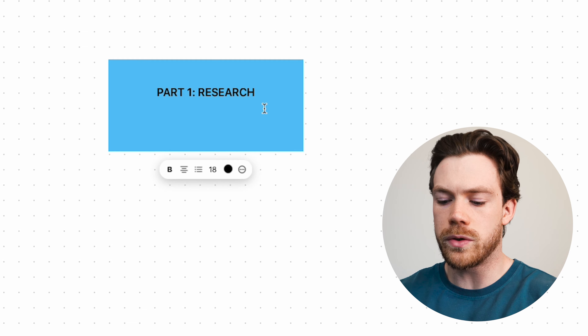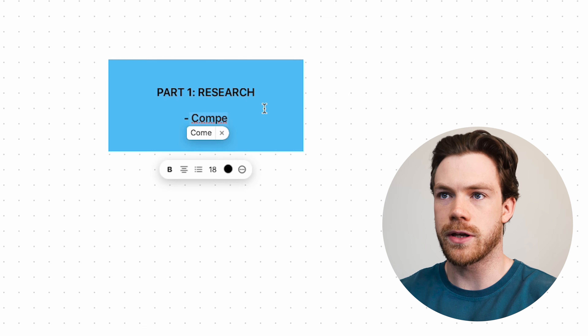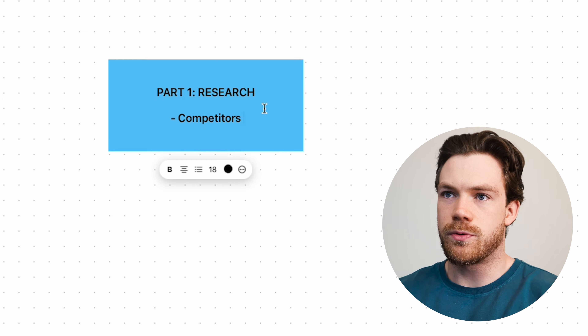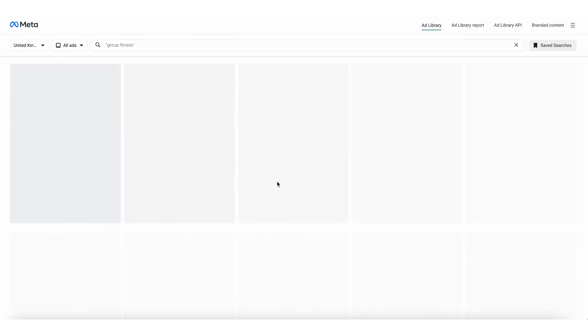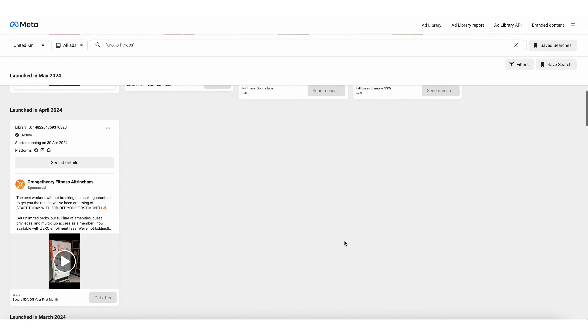First of all, we need to be looking at competitors. Things like Facebook Ad Library — we can do this with loads of different competitor research tools. You can also just search them up. You can have a look at the different industry leaders, see what they're doing in terms of ads, what they're doing in terms of landing pages, all of that stuff.